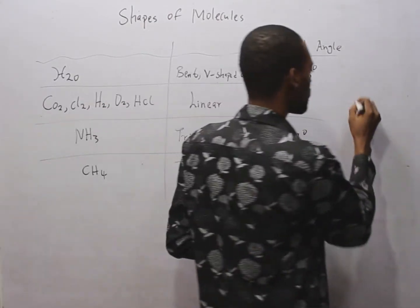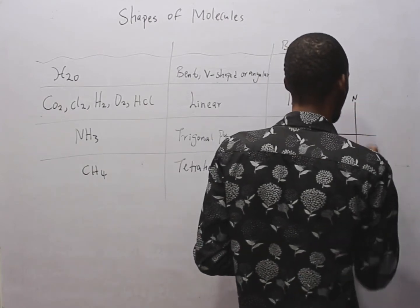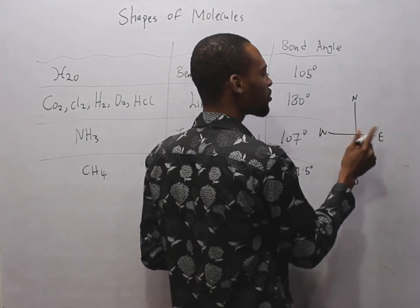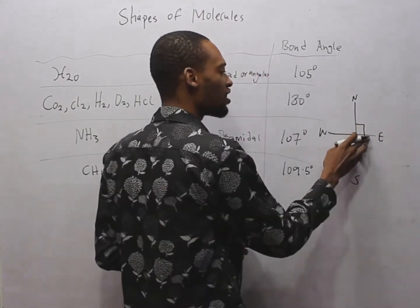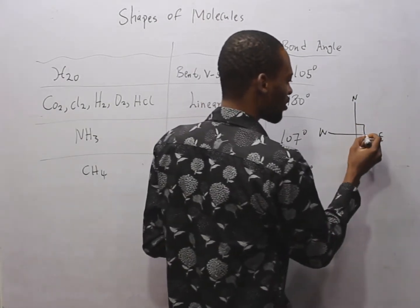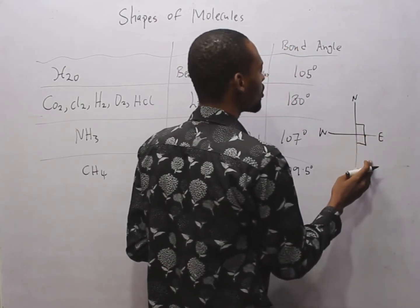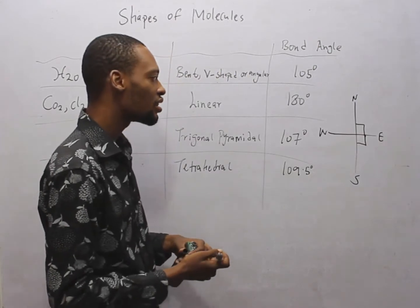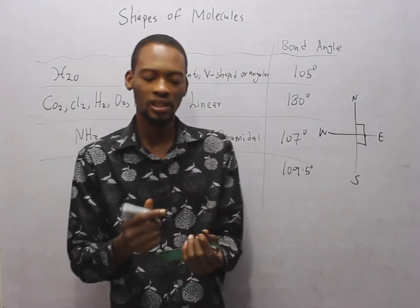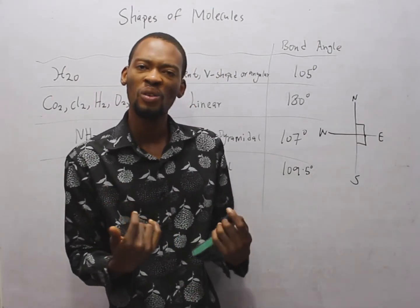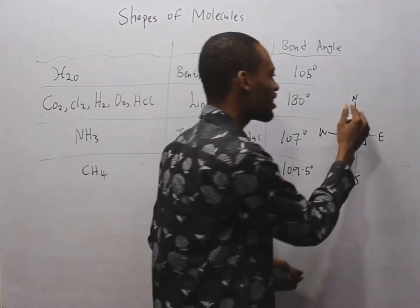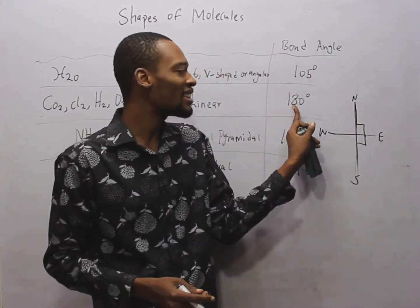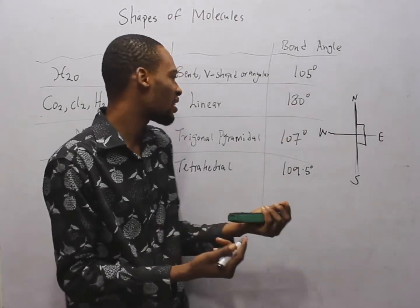If you are given the cardinal points: north, south, west and east. From north to east is a right angle, that is 90 degrees. From east to south is another right angle, 90 degrees. So this means from here to here is 180 degrees. And what is 180 degrees? The sum of angles on a straight line. This 180 degrees already represents a straight line.